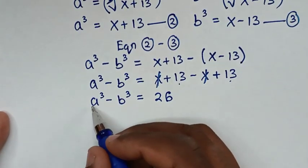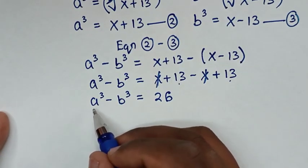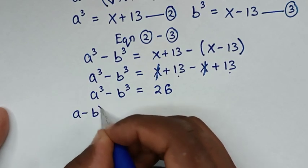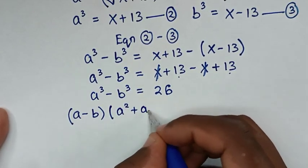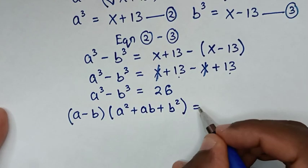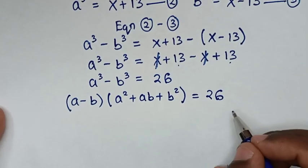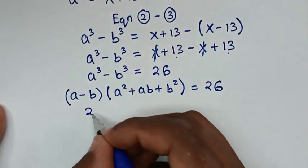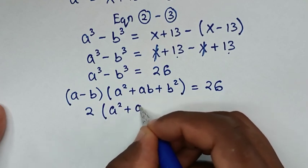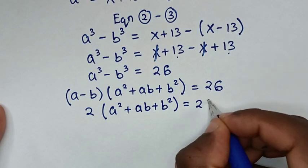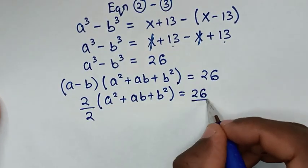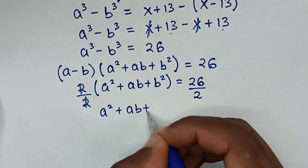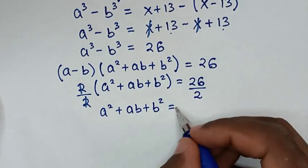In the next step, we apply the difference of cubes rule: a³ - b³ = (a - b)(a² + ab + b²) = 26. From equation 1, a - b equals 2, so we substitute 2 and get 2(a² + ab + b²) = 26. Dividing both sides by 2, we get a² + ab + b² = 13. We call this equation 4.